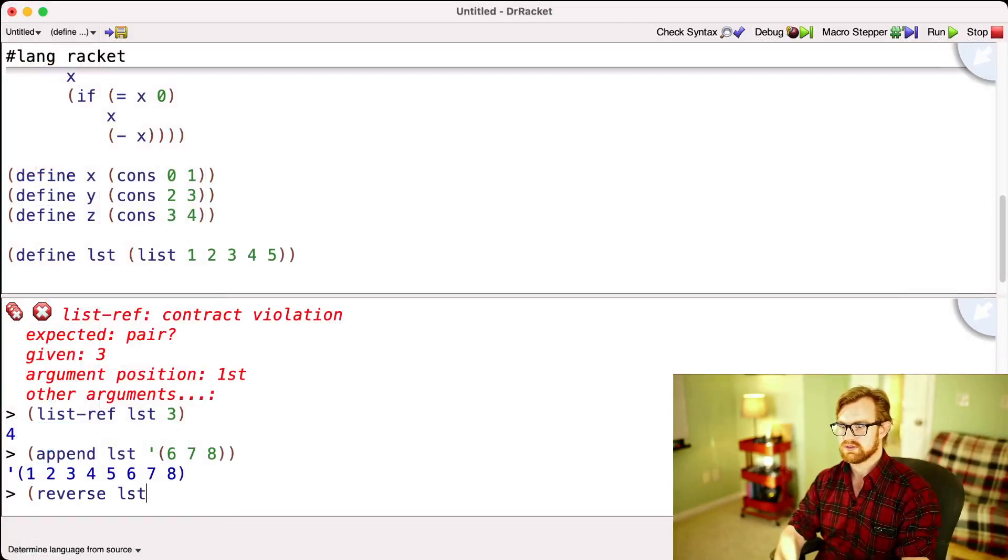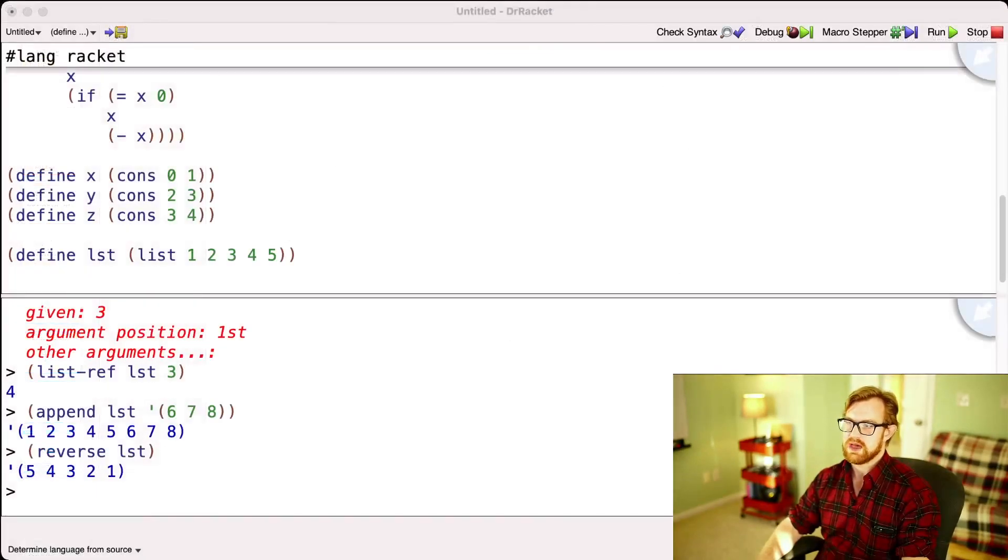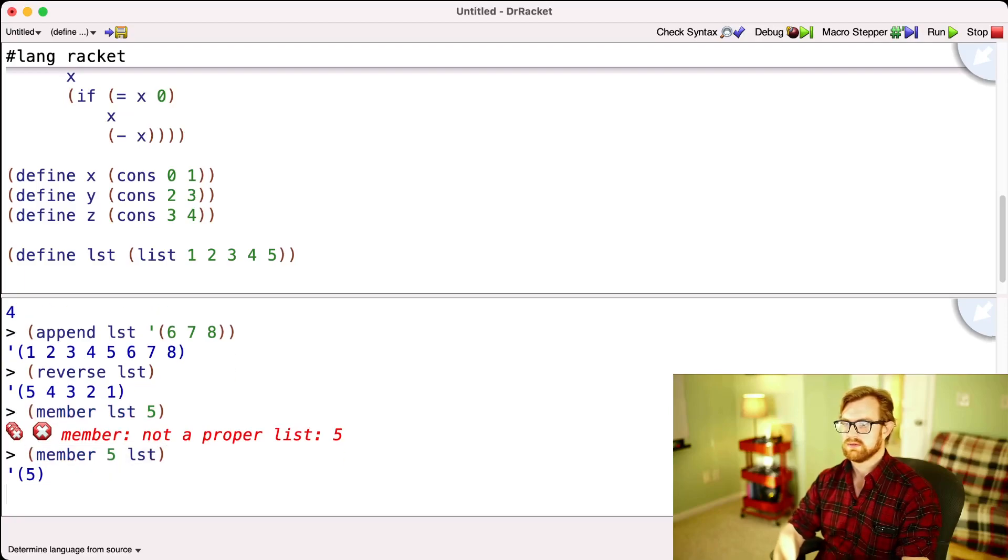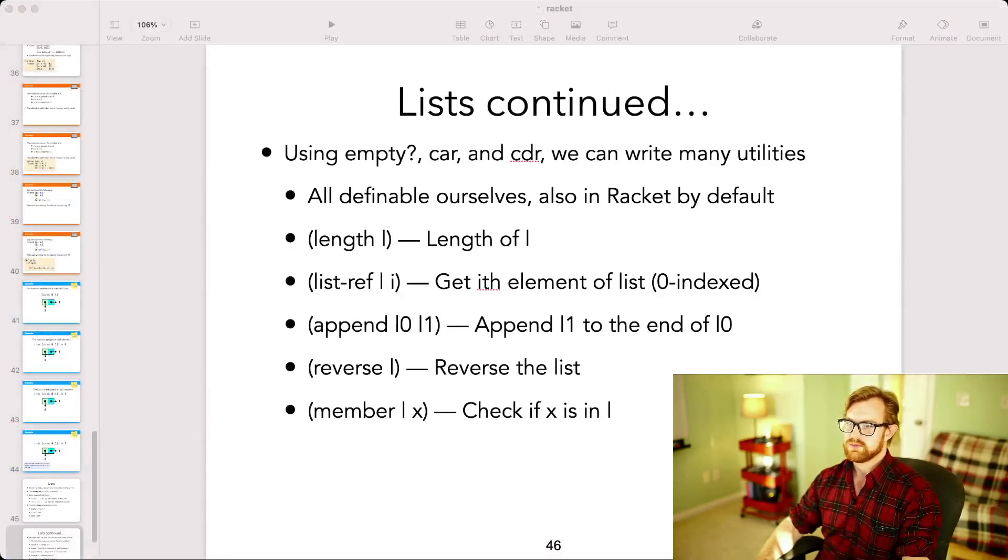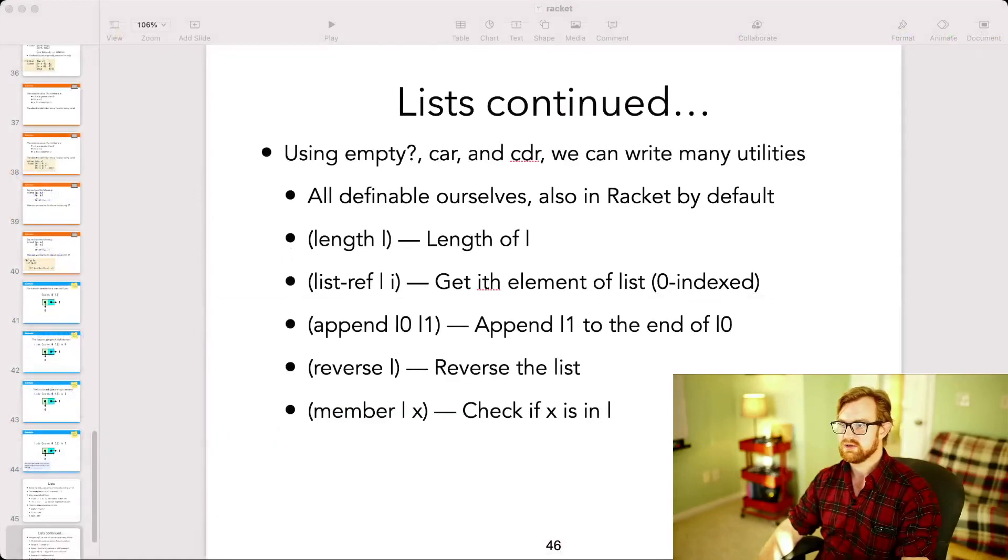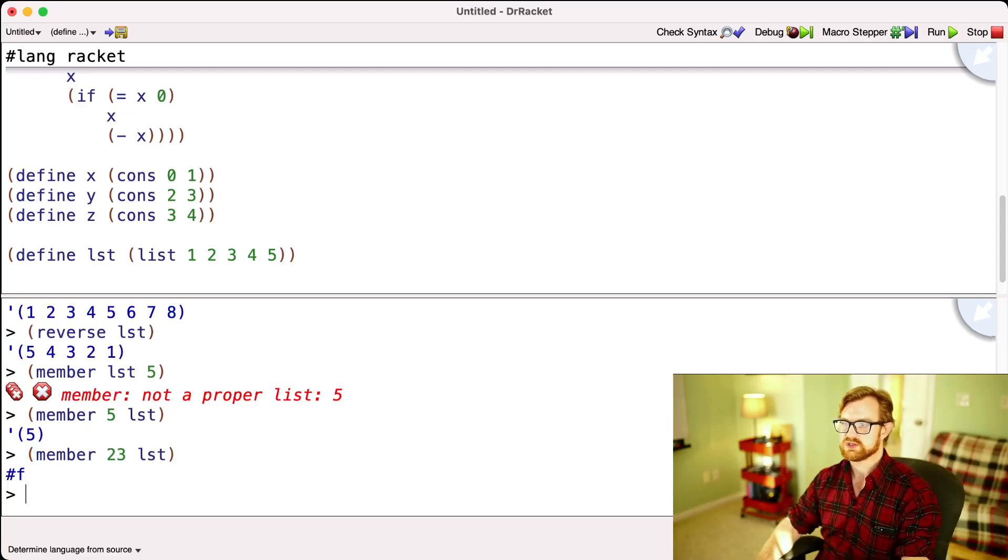I can also do reverse, which will reverse the list. So here I can go to reverse LST, and then finally I can do member to check if some element is in a list. Now notice, Racket's already biting me in some ways. Racket is untyped. And so, when I use things in the wrong order, I can occasionally just get the wrong result. Now, Racket will tell me precisely where some element is in the list, as long as it actually is in the list. But in the case that the element isn't in the list, it will return false. So let's see an example of that. Here it returns false because 23 isn't in the list.